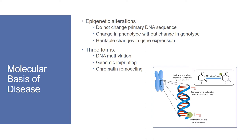In DNA methylation, methyl groups are added to DNA, which can change the activity of a DNA segment without changing the sequence. Genomic imprinting selectively inactivates chromosomal regions, and chromatin remodeling sequesters large regions of chromosomal DNA.